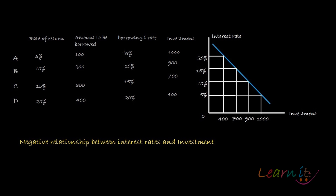When the borrowing rate of interest is 5%, how many projects are feasible? Project A is feasible because it is giving at least the rate of return which is equal to the borrowing rate of interest. Project B is also feasible because it is giving a higher rate of return than the borrowing interest rate. Projects C and D are feasible because they are giving a higher rate of return than the cost, which is 5%. So at 5%, all of these projects are feasible.